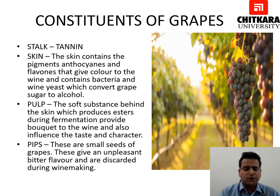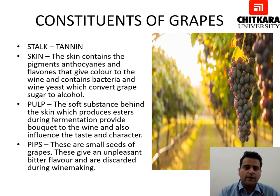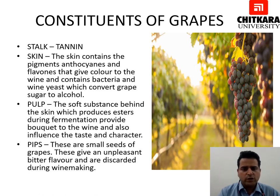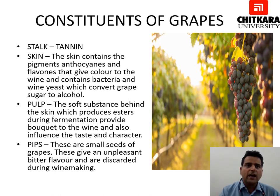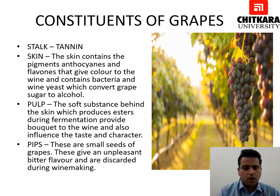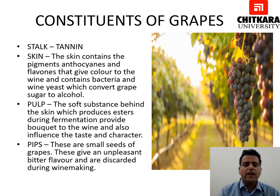The constituents of the grapes: the first is the stalk, which is a source of tannin and gives it acidic content. The second is the skin, which has pigments called anthocyanins and flavors that give color to the wine, and contains bacteria and wine yeast which converts the grape sugar into alcohol.